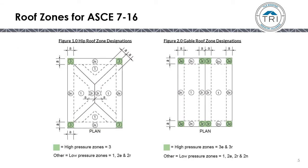Looking at the roof zones for ASCE 7-16, in Figure 1, hip roof, you'll see four different zones: Zone 1, Zone 2E, Zone 2R, and Zone 3. In Figure 2, gable roofs, you'll see six distinct zones.